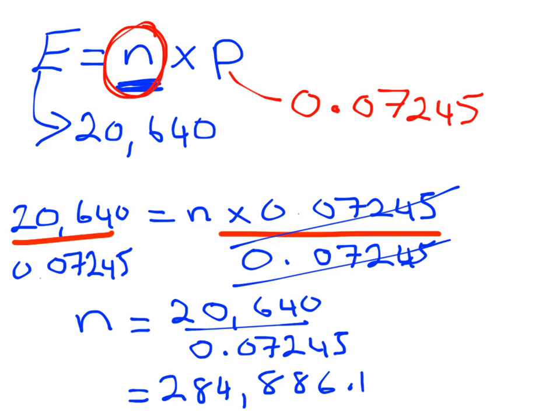I'm going to round that up, so I need to have originally 284,887 apples. That's how many apples were there originally on the trees. There's our answer.